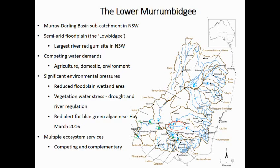A lot goes on in the Murrumbidgee. There are lots of competing water demands. It's home to the Murrumbidgee Irrigation District and the Calambly Irrigation District. It's also a source for potable and domestic water supply as well as environmental water. On the environmental side of things, there are a lot of stresses in the lower Murrumbidgee. The floodplain is considerably reduced compared to its natural state, and the remnant vegetation there is considerably water stressed, particularly during the millennium drought, and it's in recovery right now.